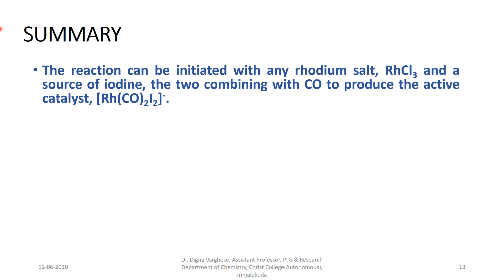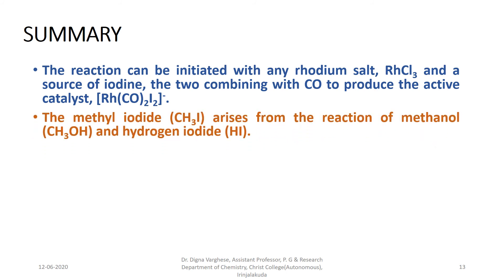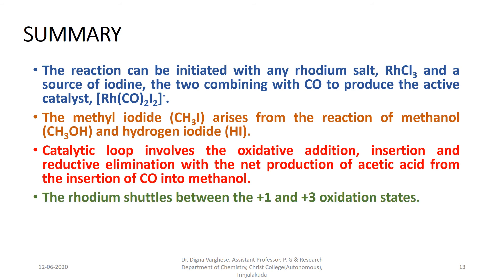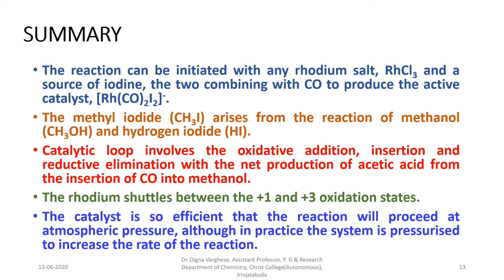Summary: The reaction can be initiated with any rhodium salt and a source of iodine, the two combining with CO to produce the active catalyst. Methyl iodide arises from the reaction of methanol and hydrogen iodide. The catalytic loop involves oxidative addition, insertion, and reductive elimination, with the net production of acetic acid from the insertion of CO into methanol. The rhodium shuttles between the +1 and +3 oxidation states. The catalyst is so efficient that the reaction can proceed at atmospheric pressure, although in practice the system is pressurized to increase the rate of reaction.